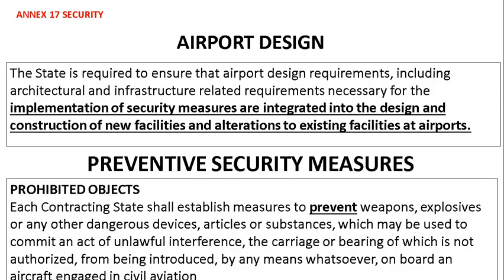Airport design: the state is required to ensure that airport design requirements, including architectural and infrastructure-related requirements necessary for the implementation of security measures, are integrated into the design and construction of new facilities and alterations to existing facilities at airports. Preventive security measures — prohibited objects: each contracting state shall establish measures to prevent weapons, explosives, or any other dangerous devices, articles, or substances which may be used to commit an act of unlawful interference from being introduced on board any aircraft engaged in civil aviation.